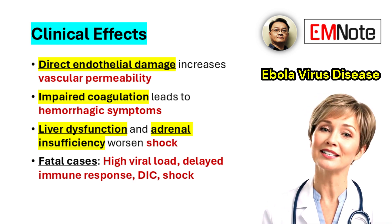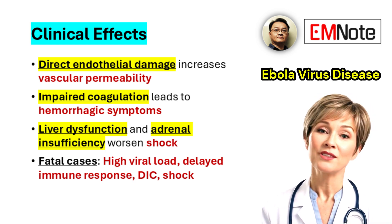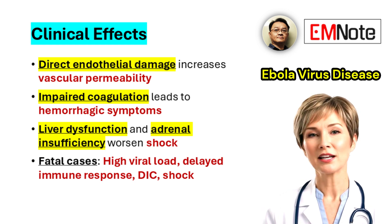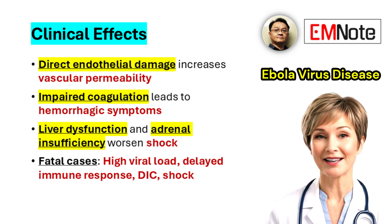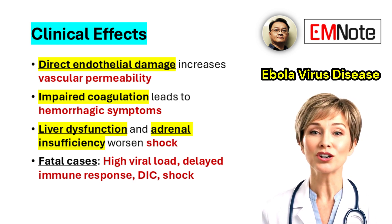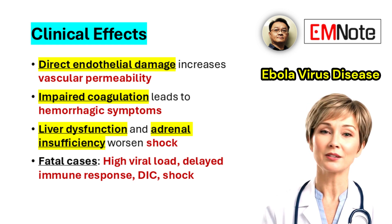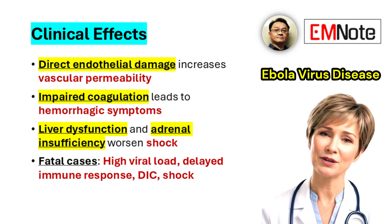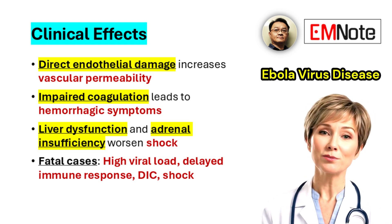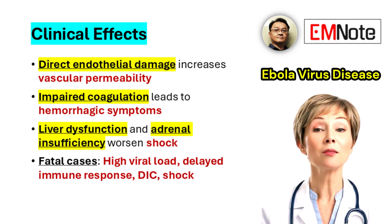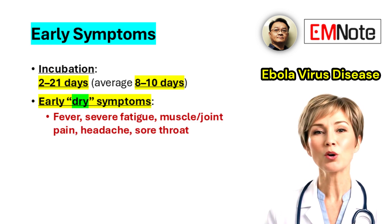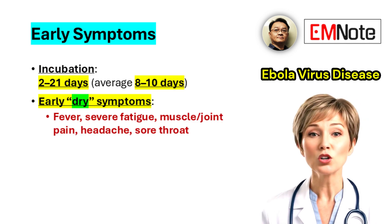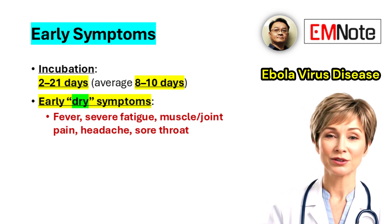Fatal cases often involve high viral loads, disseminated intravascular coagulation, and profound shock. Survivors usually demonstrate an early and effective immune response, including neutralizing antibody production.